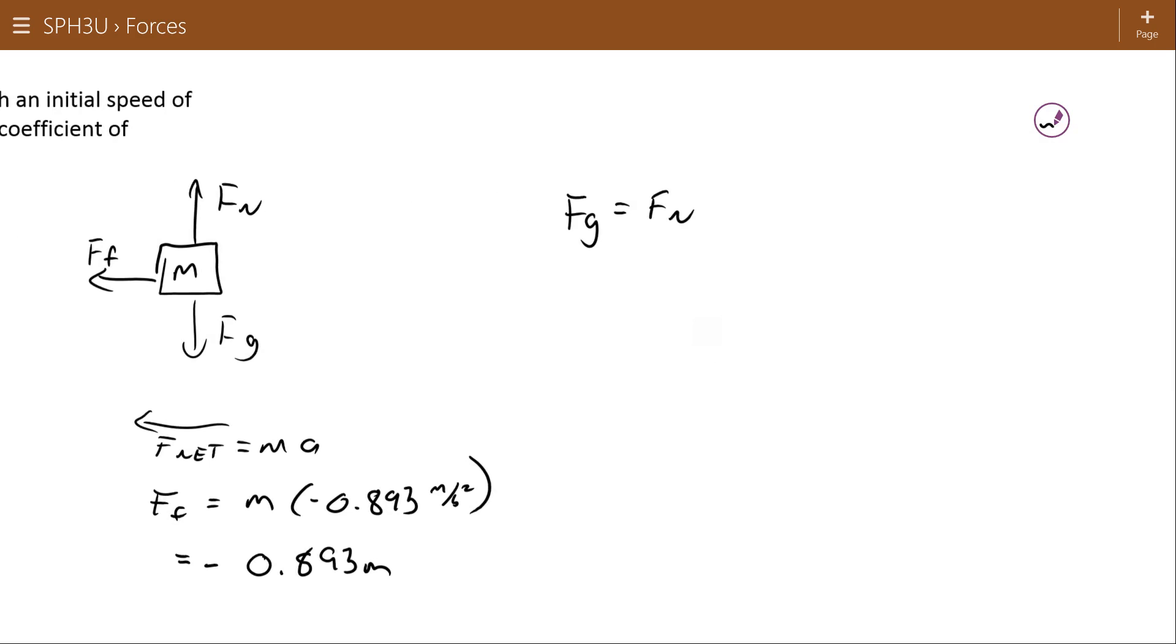Now, since my force of gravity and my normal force are equal to each other, although opposite in direction, my force of gravity is going to be equal to negative 9.8 meters per second squared times the mass, or negative 9.8 m. And so, what that means is that my normal force is going to be equal to 9.8 m.